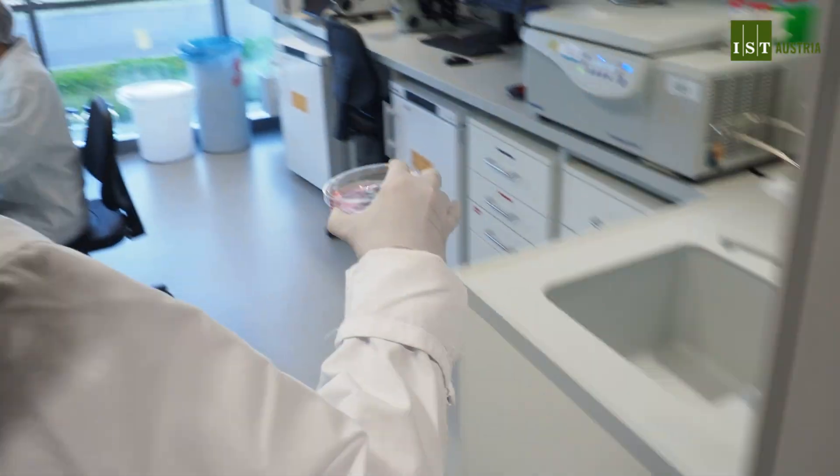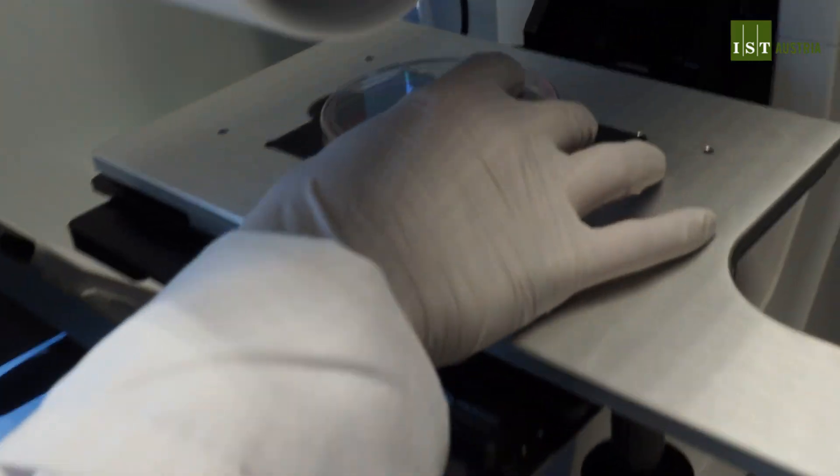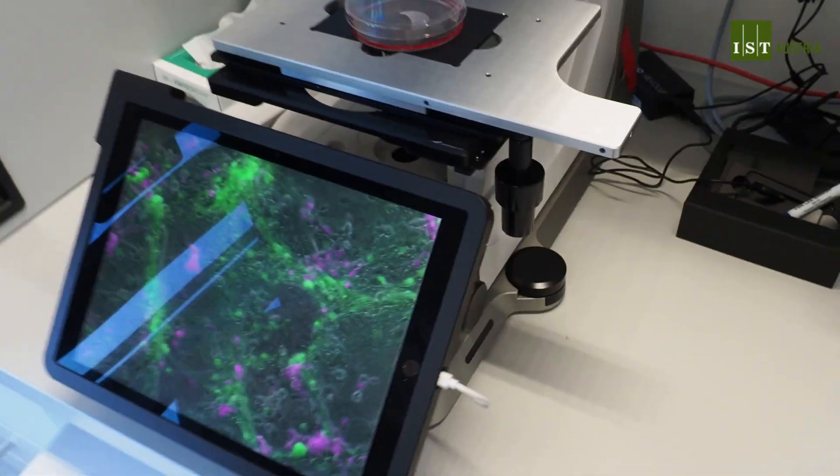First, we examine the morphology of the cells. With a fluorescent microscope, we look at how the brain cells grow and form connections with each other.